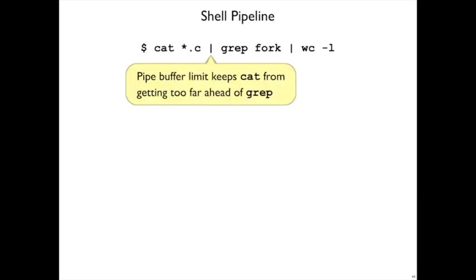Note also an important thing about that limit on pipes. Because the pipe that's represented by this vertical bar here, because that pipe has a limited size, the cat program, which is likely to be faster than grep, will only be able to go so far ahead.